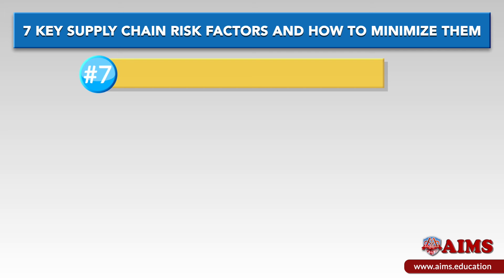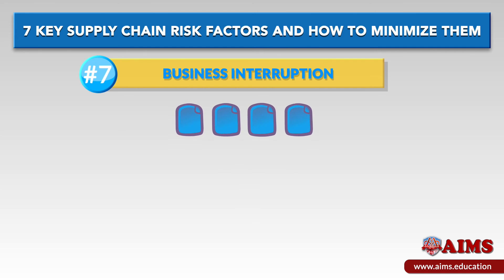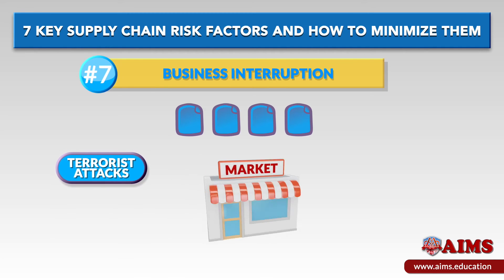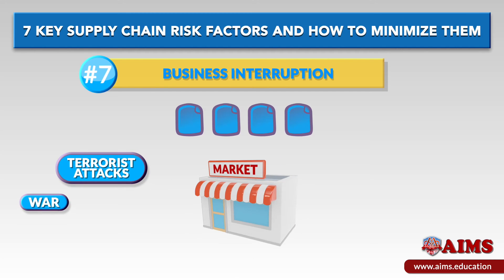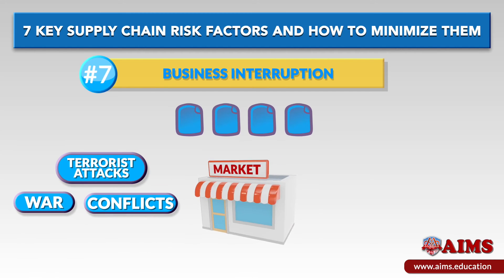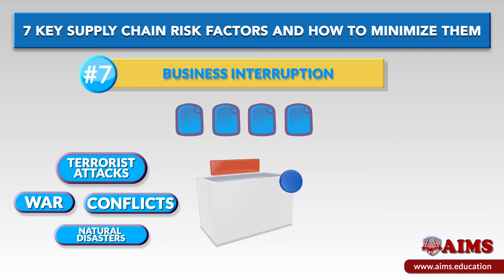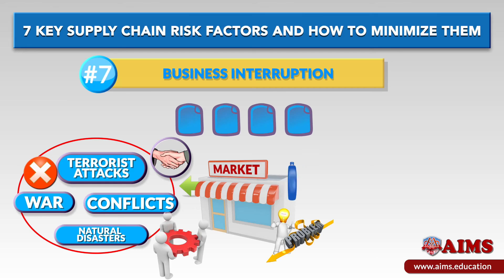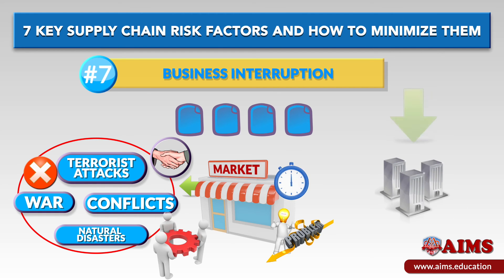Factor number seven: business interruption. There are many factors which can cause business interruptions, starting with terrorist attacks, war, conflicts, and natural disasters, among many others. Most of the time these issues can't be controlled or dealt with easily, so a proper way to eliminate the problem has to be found by each company.